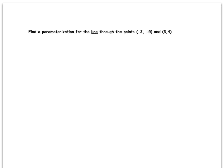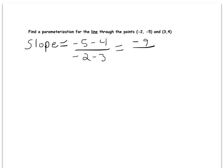We want to find a parametric representation of the line. First I'm going to forget about the parametrization and just write an equation of the line that passes through those two points. I'll use point-slope form. First I'll compute the slope, which is the difference in the y values over the difference in the x values. The slope of the line that passes through these two points is negative 9 over negative 5, so it's nine-fifths.